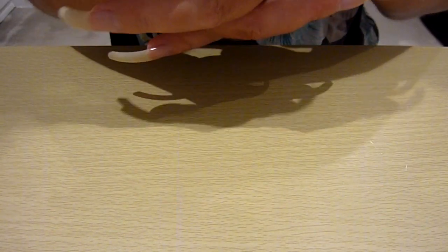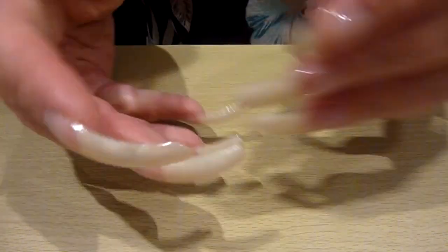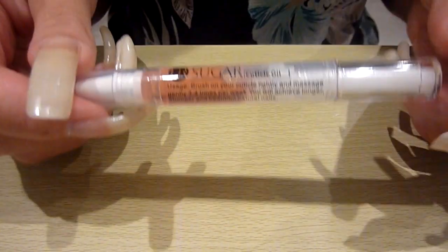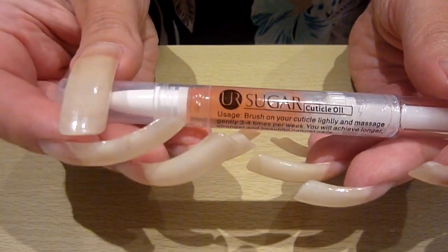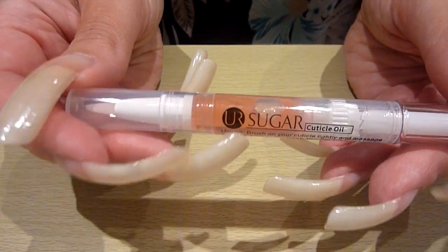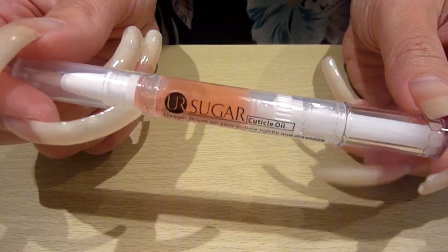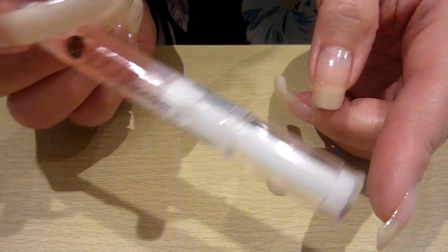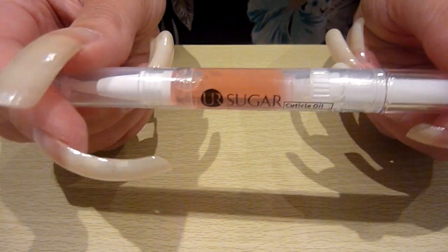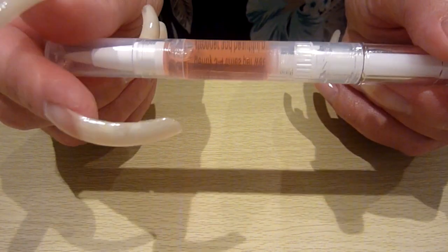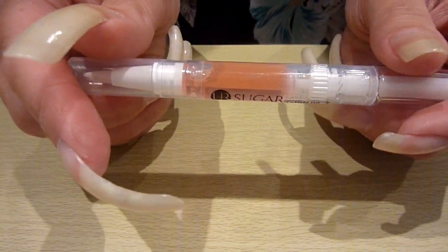And Born Pretty have given me a promotional code for this one. And it is SOPHIE20. That's S-O-P-H-I-E-20. So you can put that in the shopping basket in the promotional code box at checkout. And they also do free shipping worldwide. So that's excellent as well.